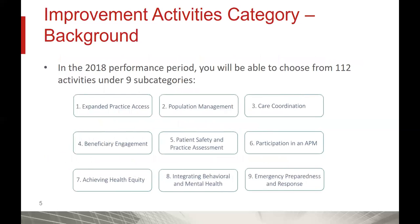For the 2018 performance period, you will be able to choose from 112 different Improvement Activities that are divided under nine subcategories. CMS is giving you and your practice flexibility to select Improvement Activities that make the most sense for you and your practice — you're not required to submit Improvement Activities in all nine subcategories. You have flexibility over which Improvement Activities make the most sense for you.